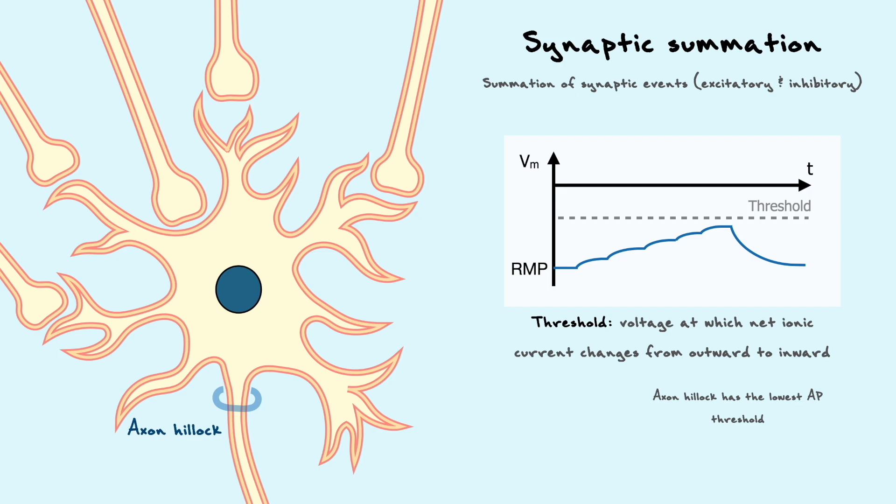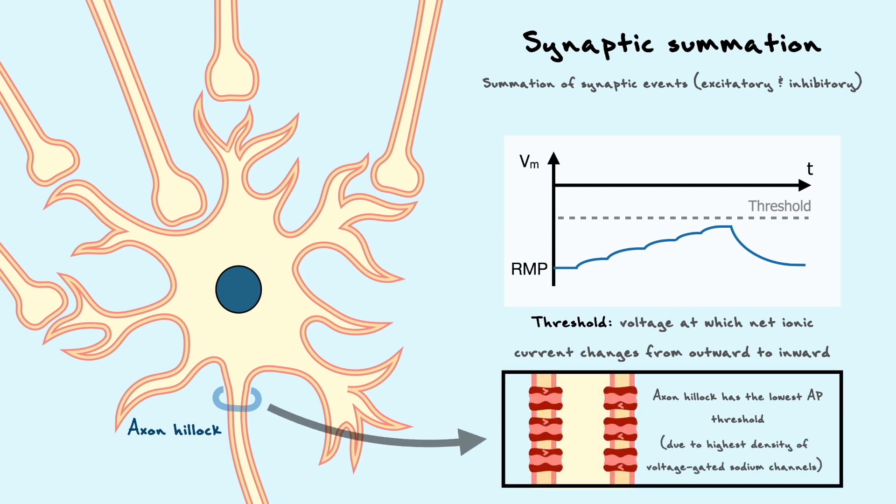It turns out that the axon hillock is the place which usually has the highest density of voltage-gated sodium channels, and thus provides the most inward current to the cell.